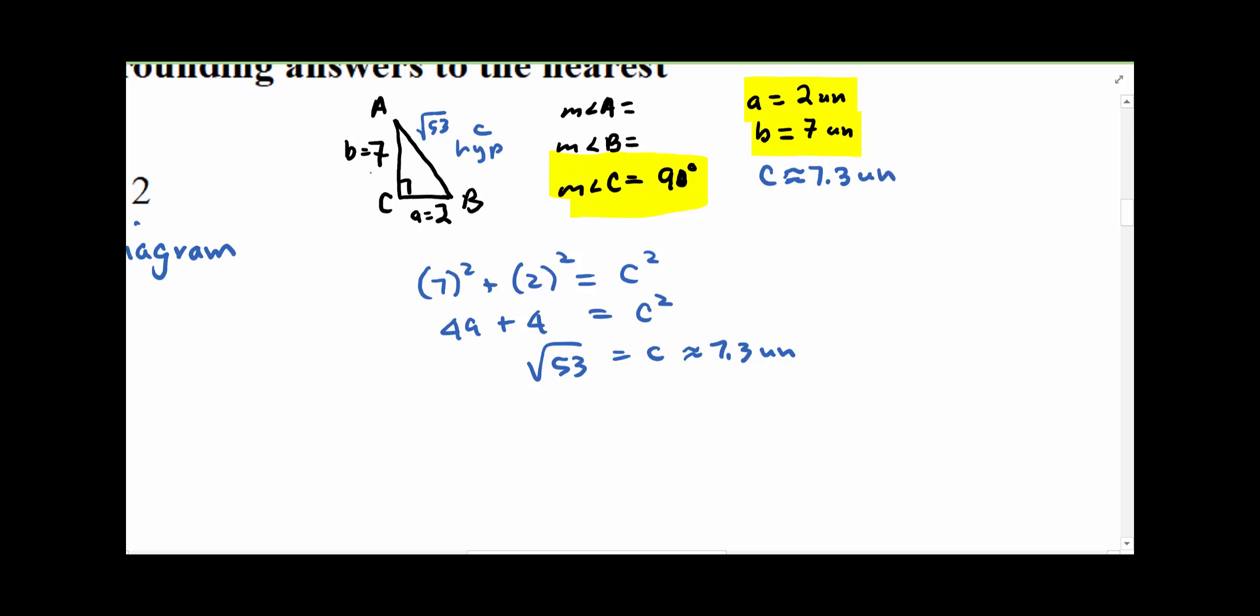And we'll find A this time, and notice what we have. If we're looking from the viewpoint of angle A, we have the opposite side, and we have the adjacent side. Well, that's a tangent function.